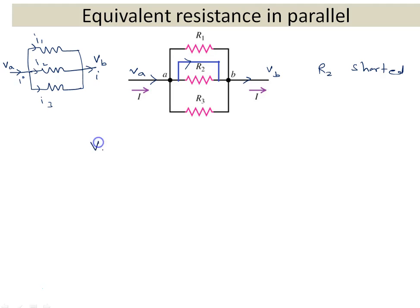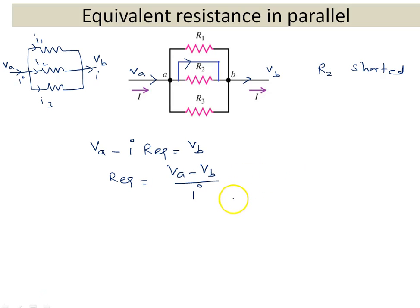If I write the equation Va minus I·R_equivalent equals Vb, then R_equivalent equals (Va − Vb)/I, and it should equal 0 because there is no resistance path — all current will bypass through the short. So if any branch in a parallel resistance circuit is shorted, the net equivalent resistance will be 0.